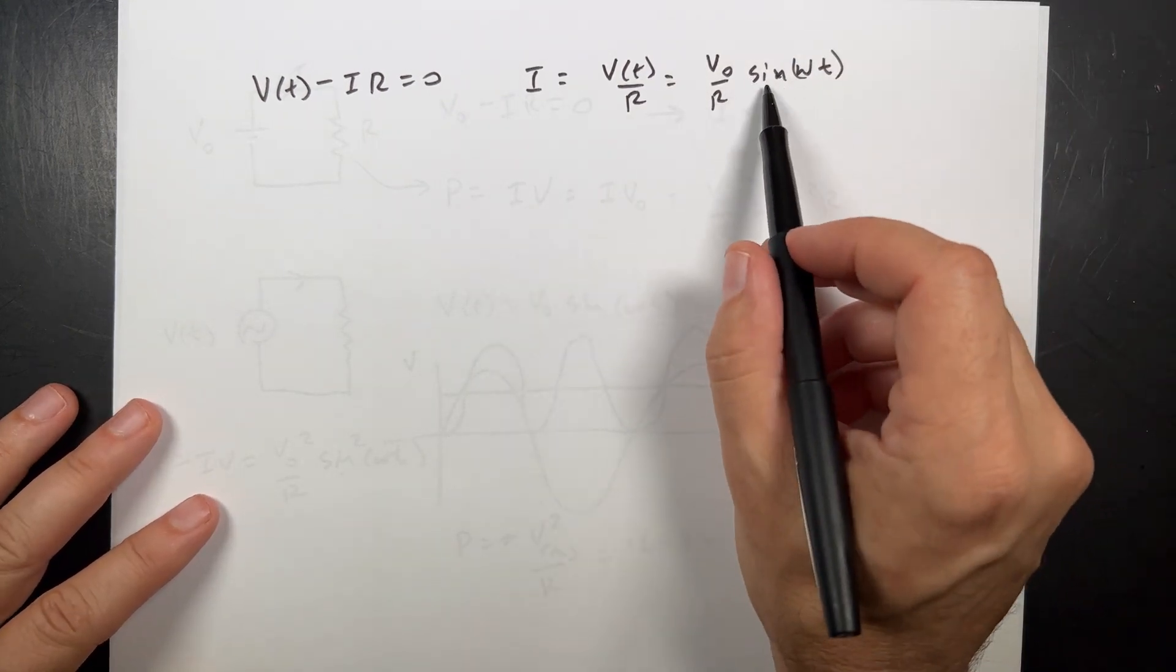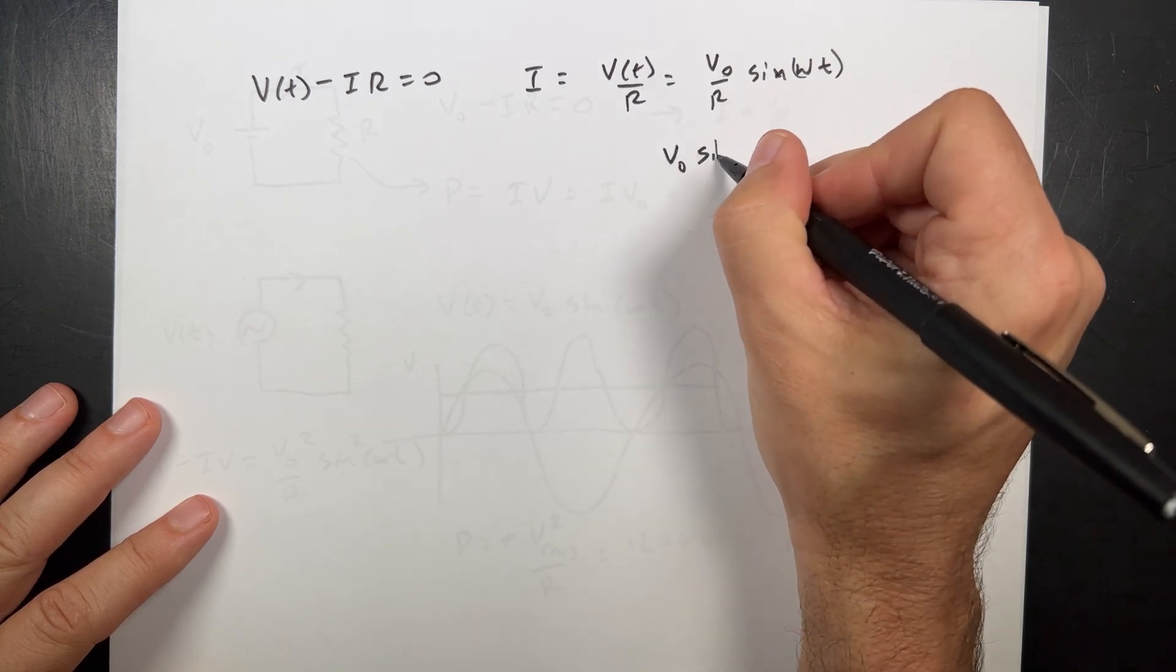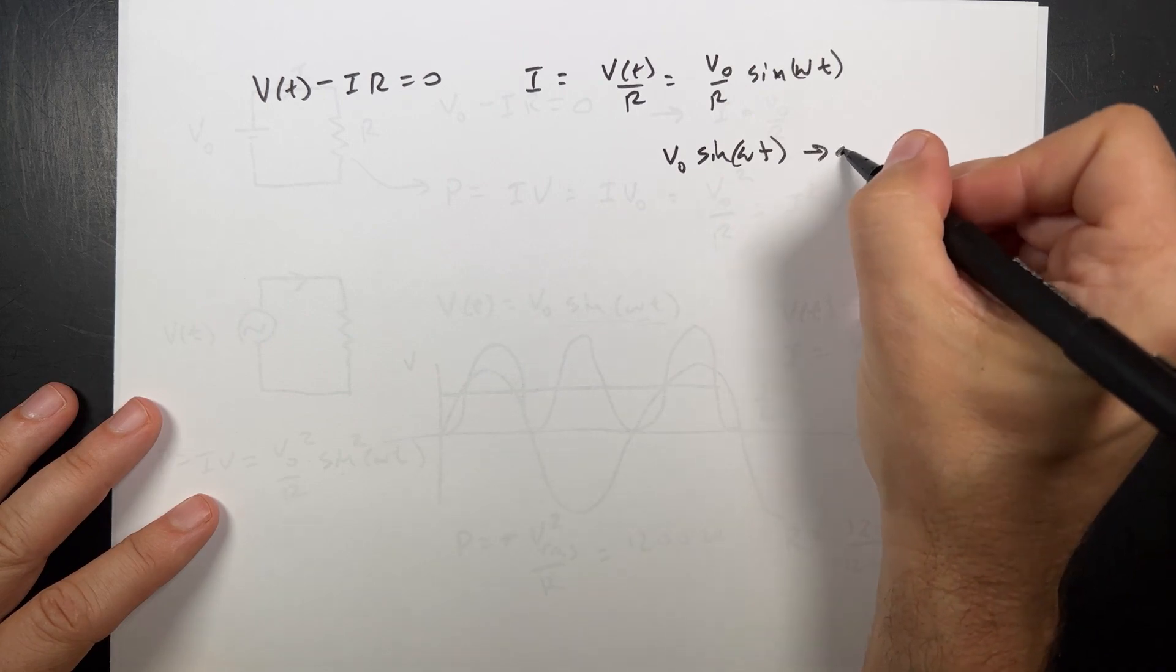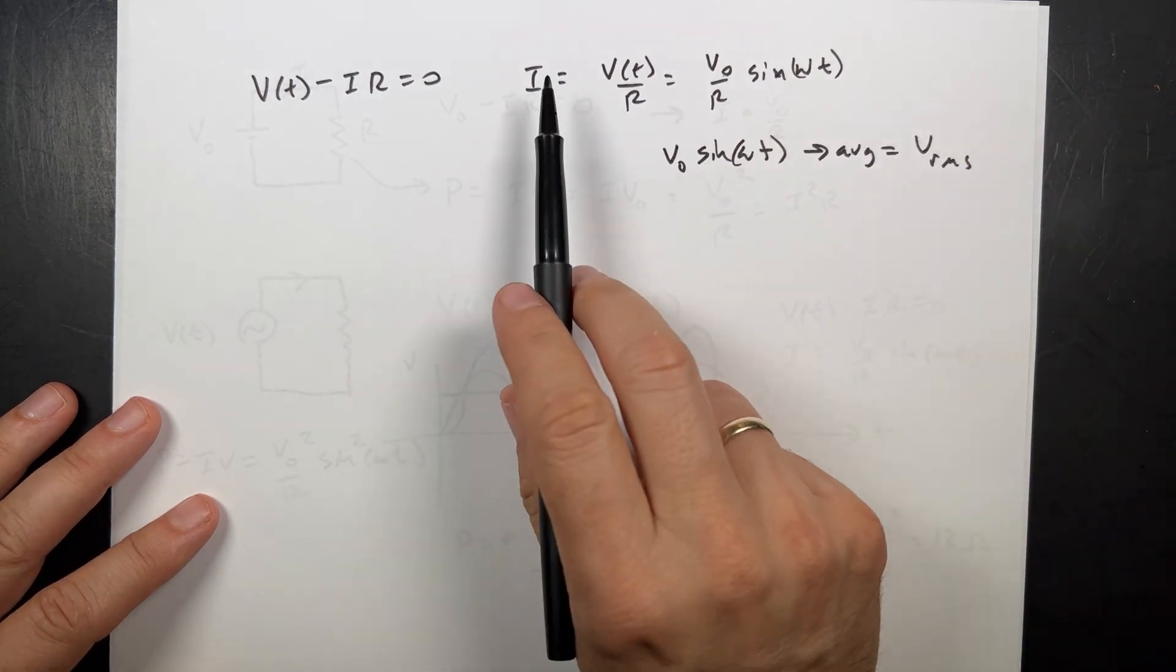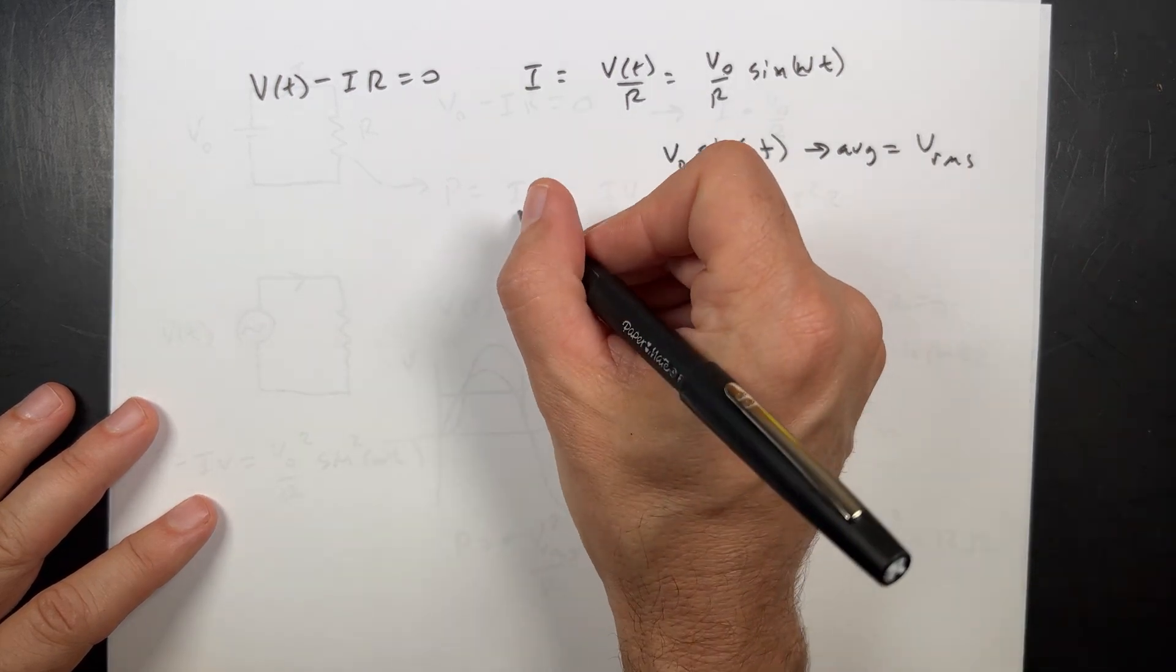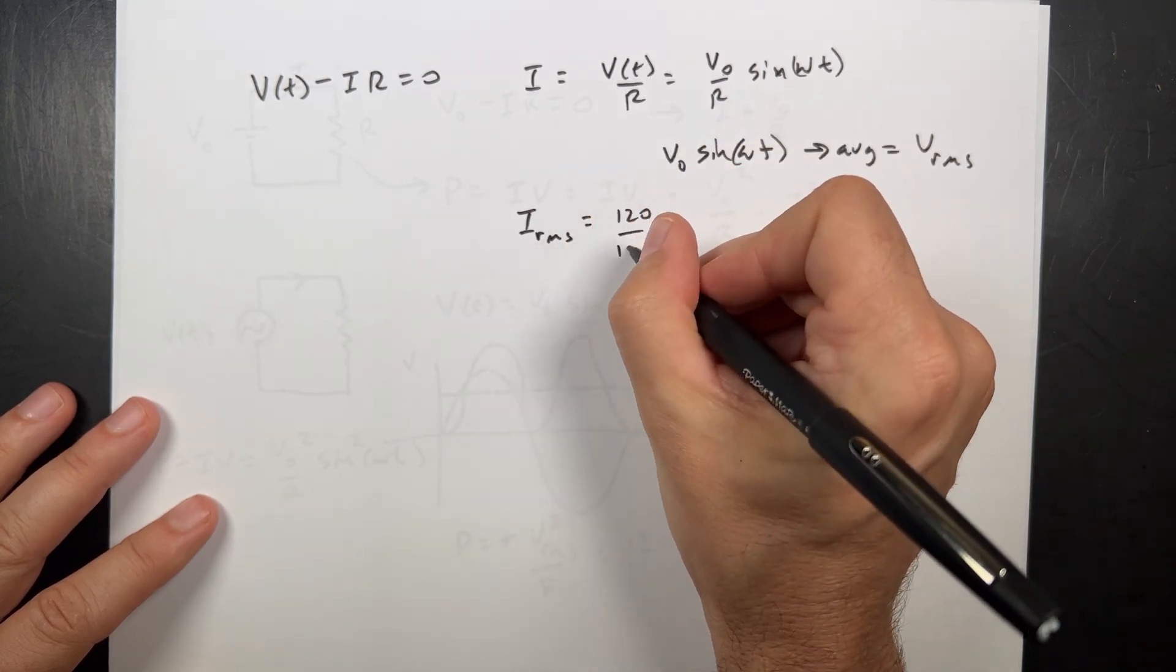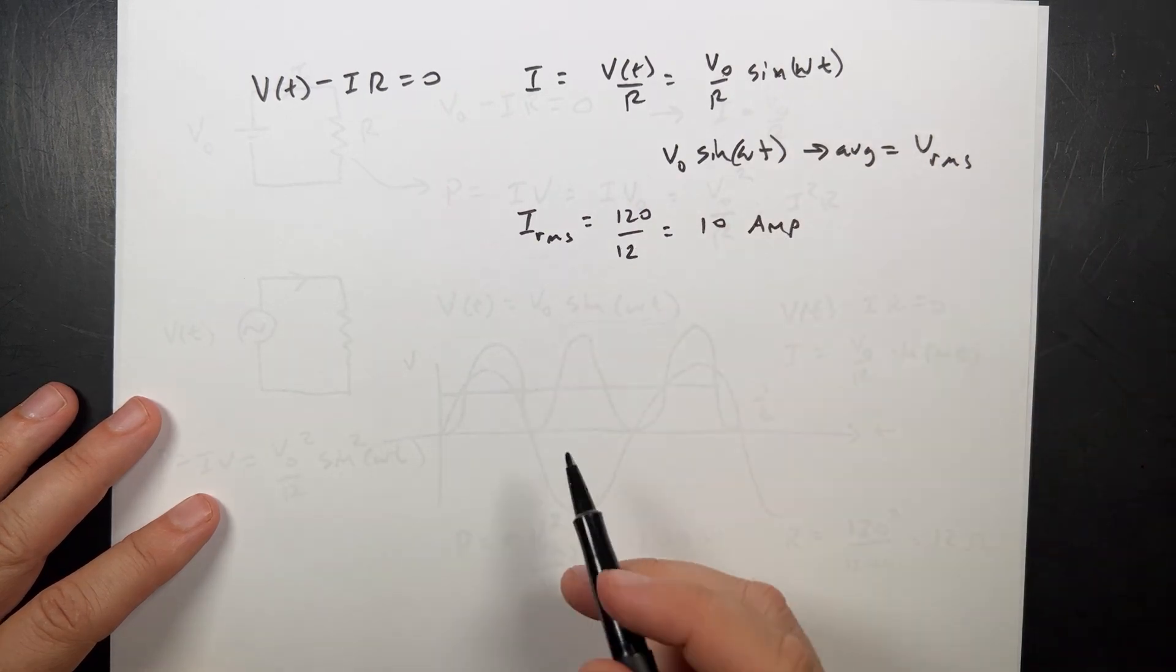Now, the average of V0 sine omega T is equal to V RMS. So the RMS current is just going to be the RMS voltage divided by R. So I RMS is going to be the RMS voltage 120 over 12, and that's 10 amps. I did that one in my head.